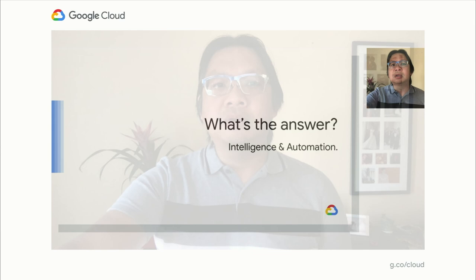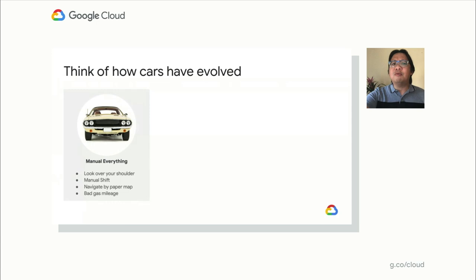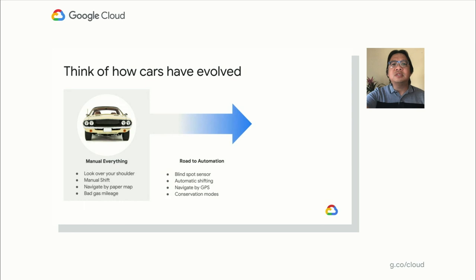Today's IT environments, whether on-prem or in the cloud, feel like a car from the 1970s. Everything is manual — you've got to look over your shoulder, shift manually, look at a paper map, all while getting bad gas mileage. We want to upgrade your cloud and provide experiences like modern cars and beyond. How can we provide tools like blind spot sensors and GPS that make your current cloud experience markedly better? Ultimately, we're on a journey to a future where we want to automate everything for you. We are looking to move your cloud forward in the same way that Google's Waymo is moving cars forward.